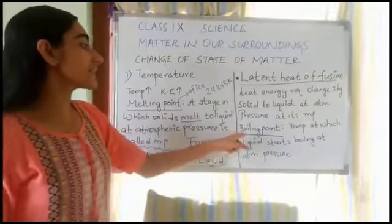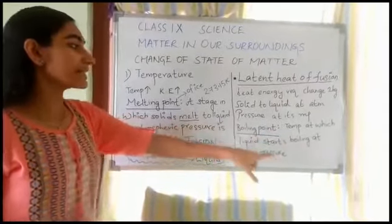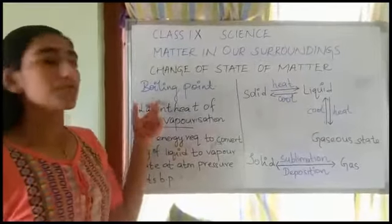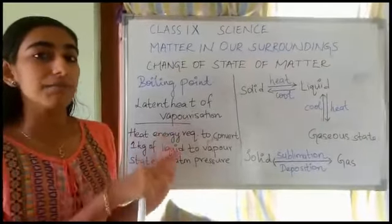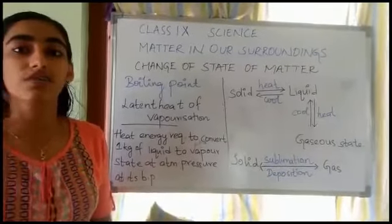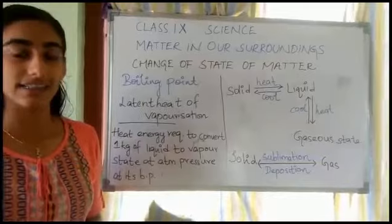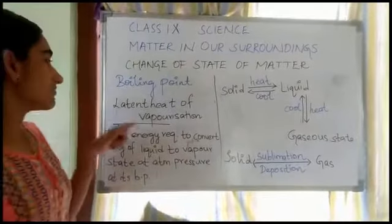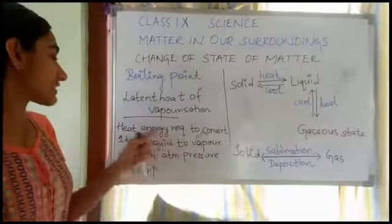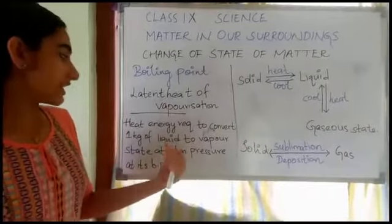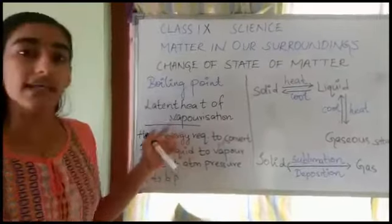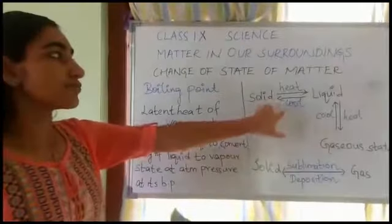The next point is boiling point. Boiling point is the temperature at which the liquid starts boiling at its atmospheric pressure. To check the boiling point we do a similar activity but using water. At a particular stage the water starts vaporizing and enters the gaseous state — that temperature is the boiling point. Latent heat of vaporization is the heat energy required to convert 1 kg of a liquid to its vapor state at atmospheric pressure at its boiling point.